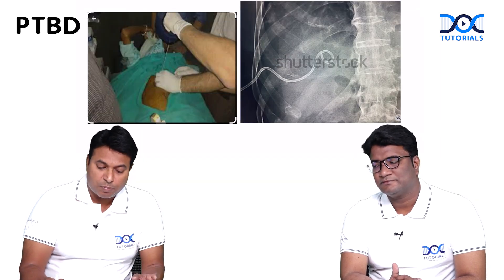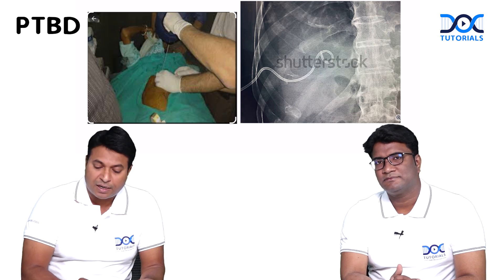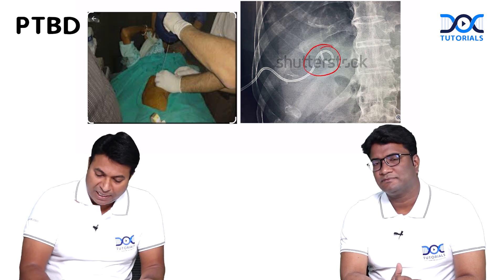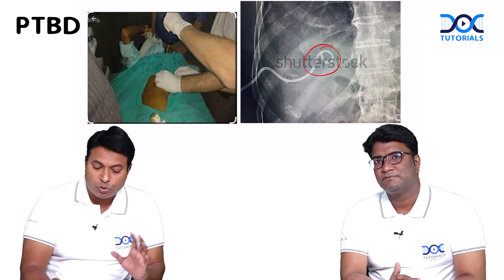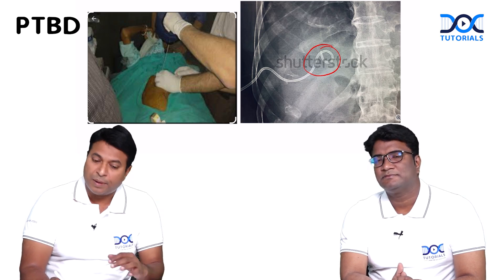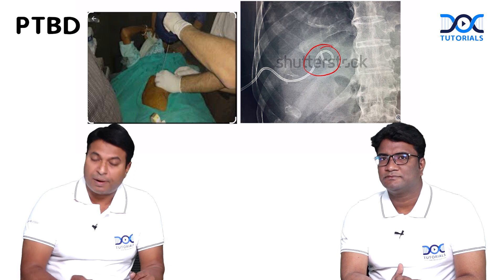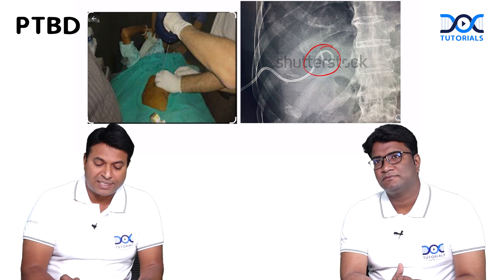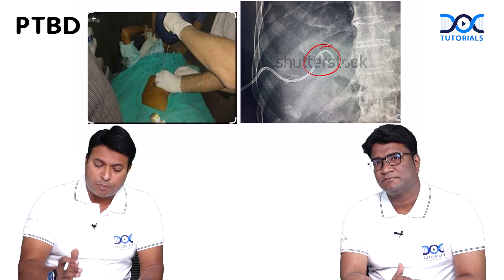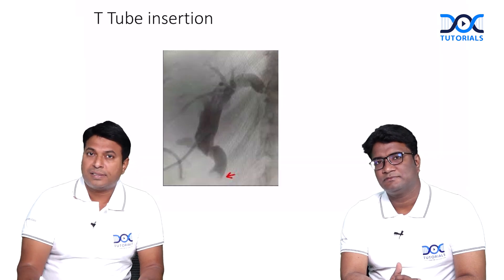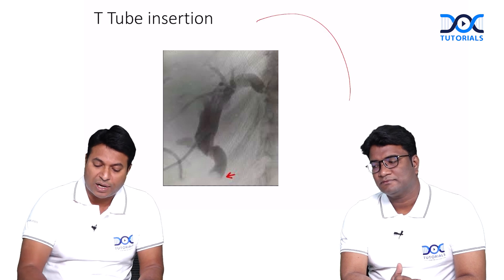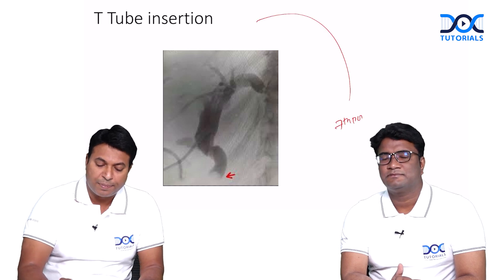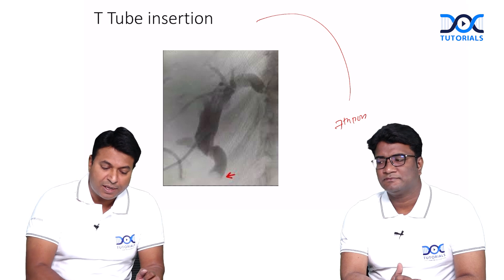If ERCP is not possible, we call the radiologist who under ultrasound guidance puts a PTBD into the intrahepatic bile duct. The bile drains retrograde outside the abdomen and the patient recovers from cholangitis. If this is also not possible, only then do we perform surgical CBD exploration with T-tube insertion. This image shows a T-tube cholangiogram done on the seventh post-operative day.